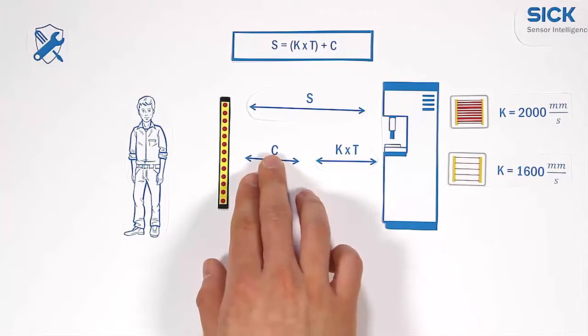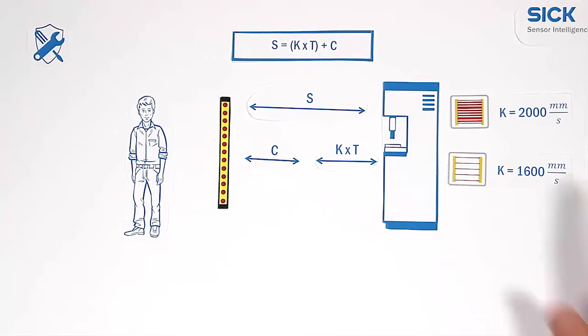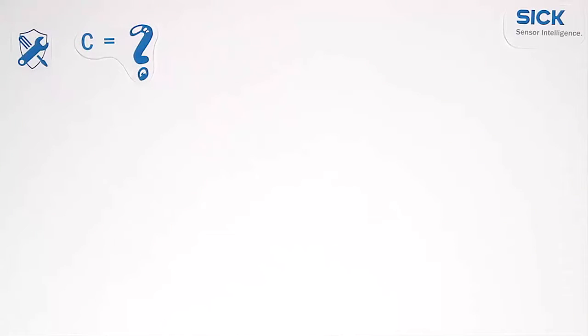The fixed intrusion distance C has to be added. What does C actually mean? Let's take a look at this light curtain.